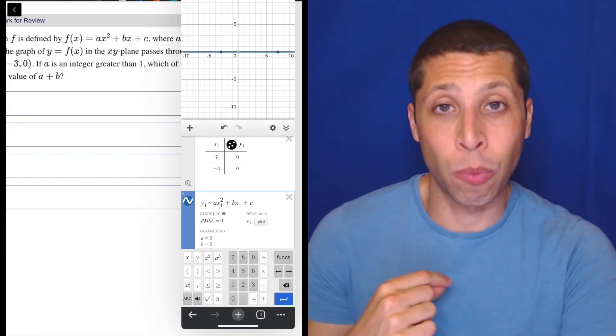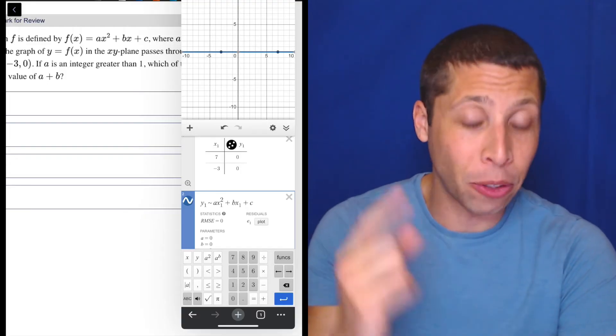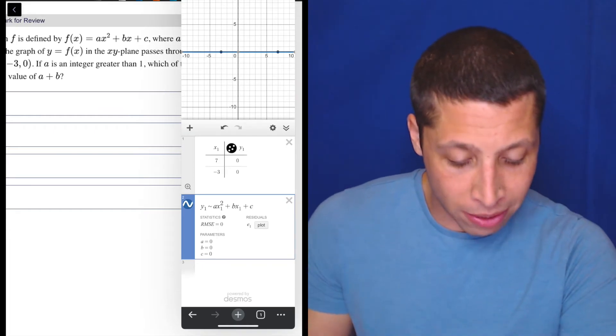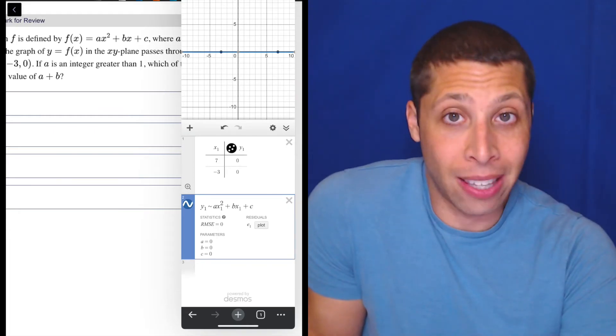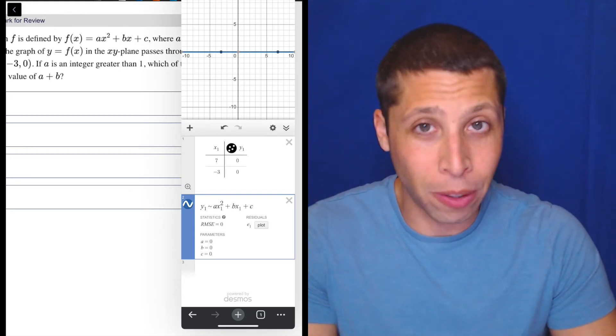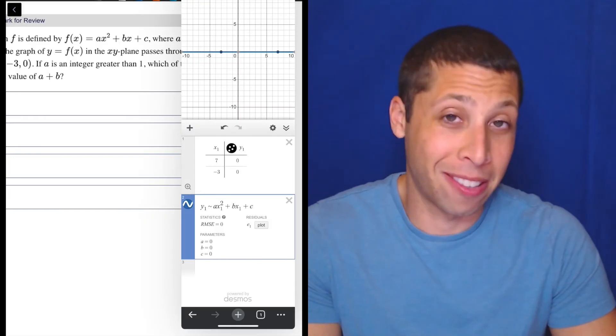The big thing though, is we use y one and x one because we want to tell Desmos to go to that table to get the points. But when we do that, we have a problem. It tells us that A is zero, B is zero and C is zero. And we just get a flat line. So that's just because Desmos doesn't, it's always going to go the path of least resistance. And for it, it thinks that that's what we wanted.